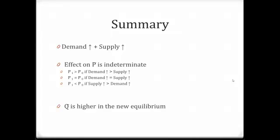To summarize: when we see an increase in demand simultaneously with an increase in supply, the effect on equilibrium price is indeterminate. The new equilibrium price will be greater than the initial equilibrium price if the increase in demand is relatively stronger than the increase in supply. Equilibrium price will remain unchanged if the two forces are proportionate. The new equilibrium price will be less than the original if the relative strength of the supply factors is greater. Irrespective of relative strengths, higher demand together with higher supply results in more transactions — equilibrium quantity will definitely be higher.